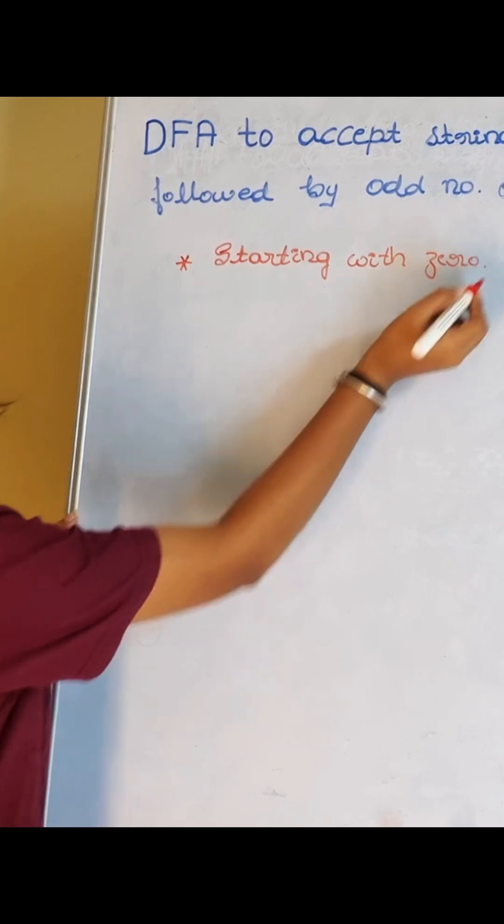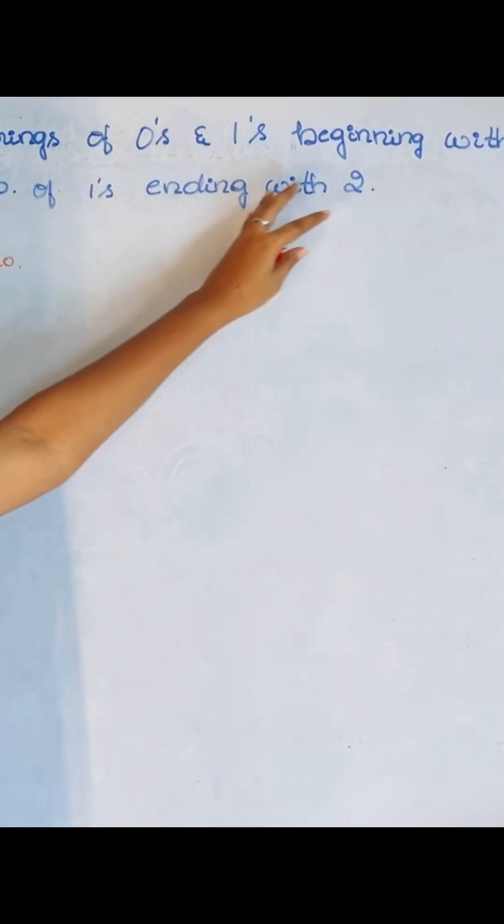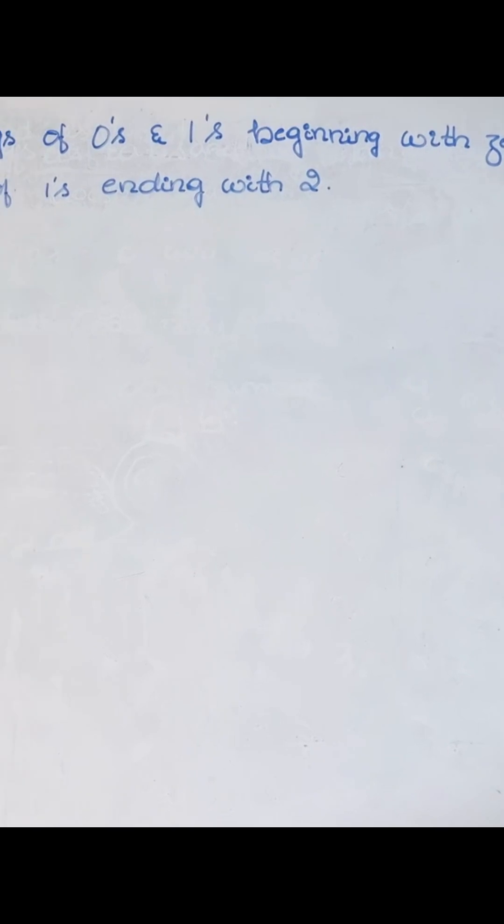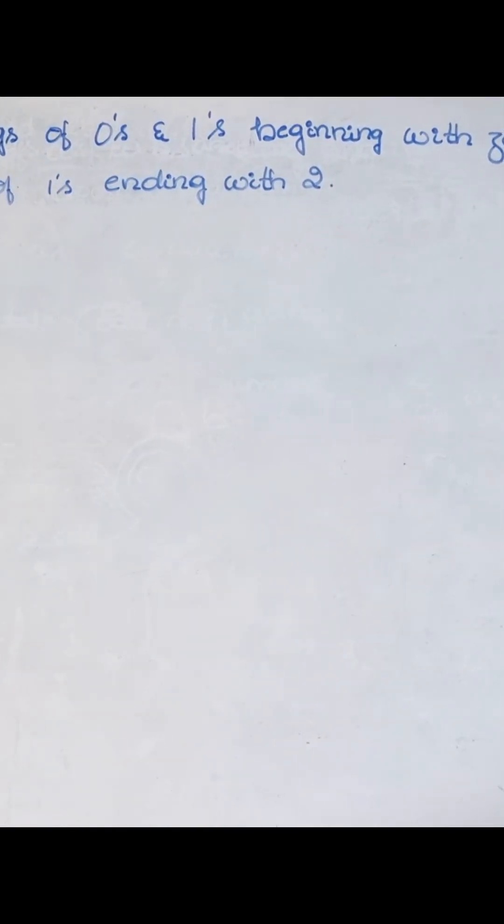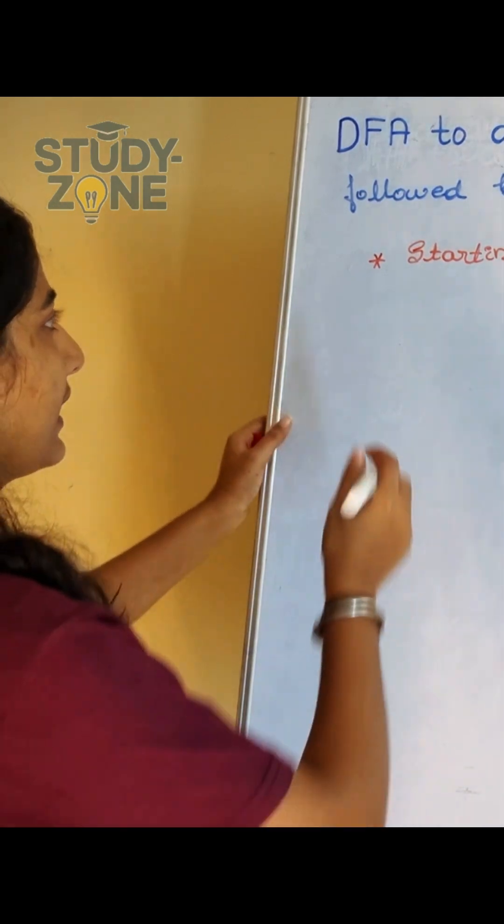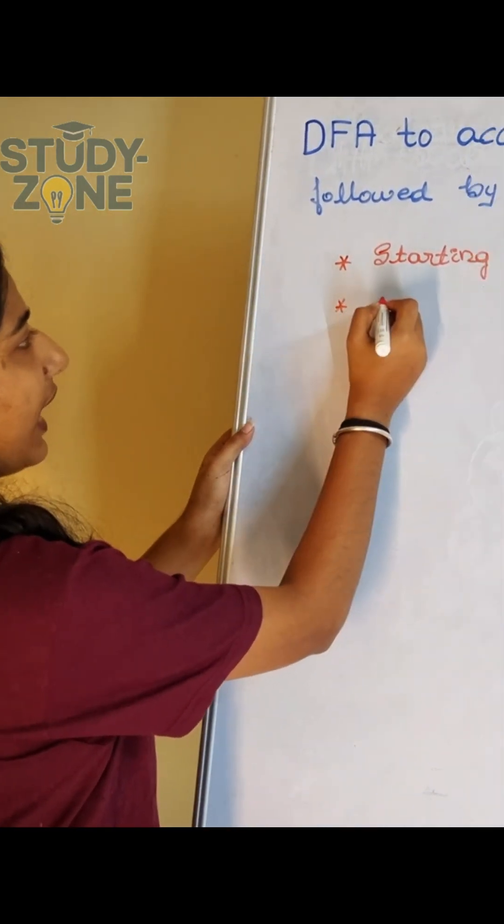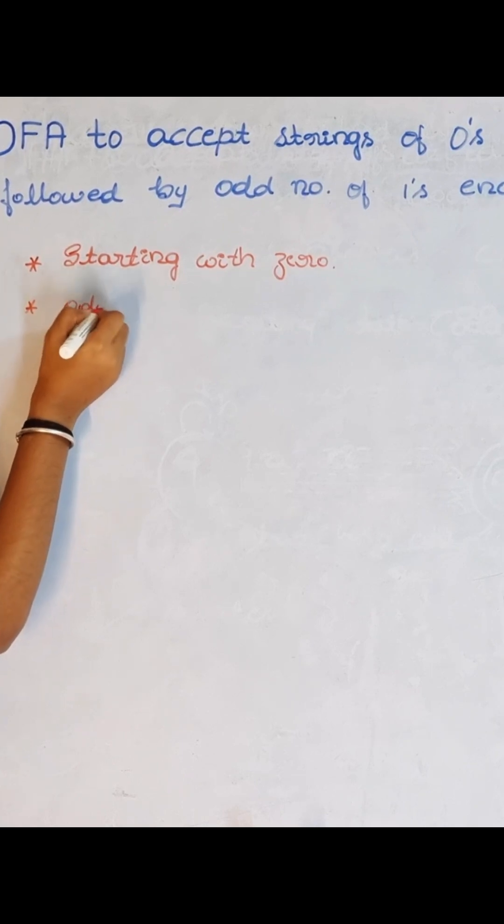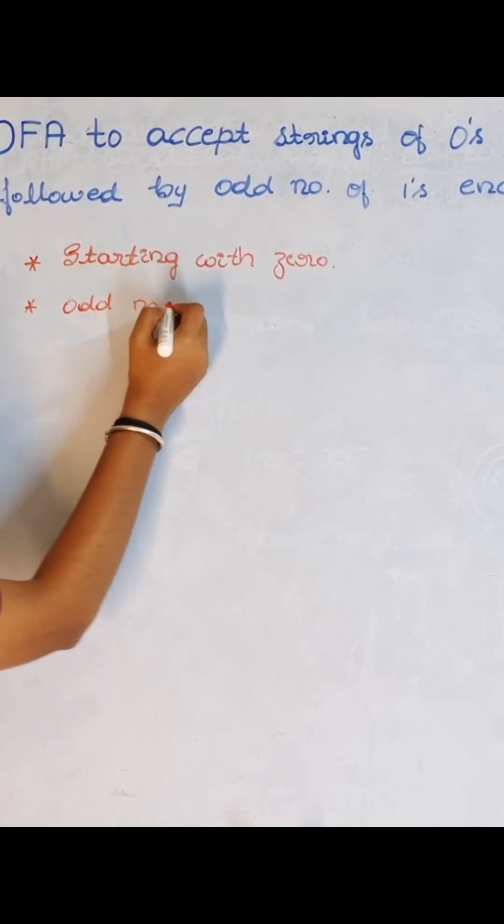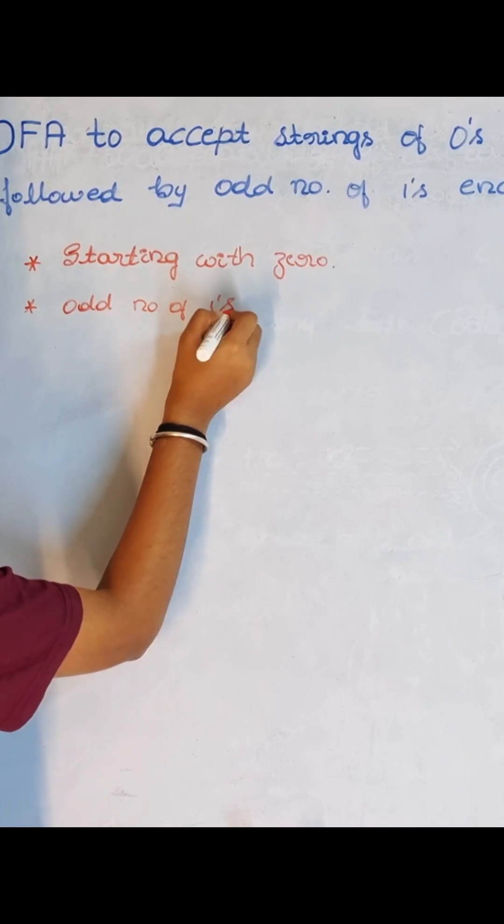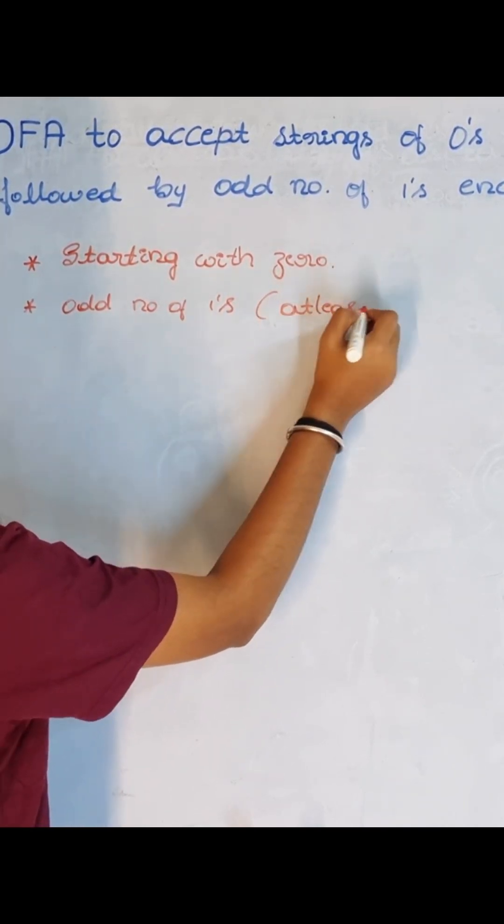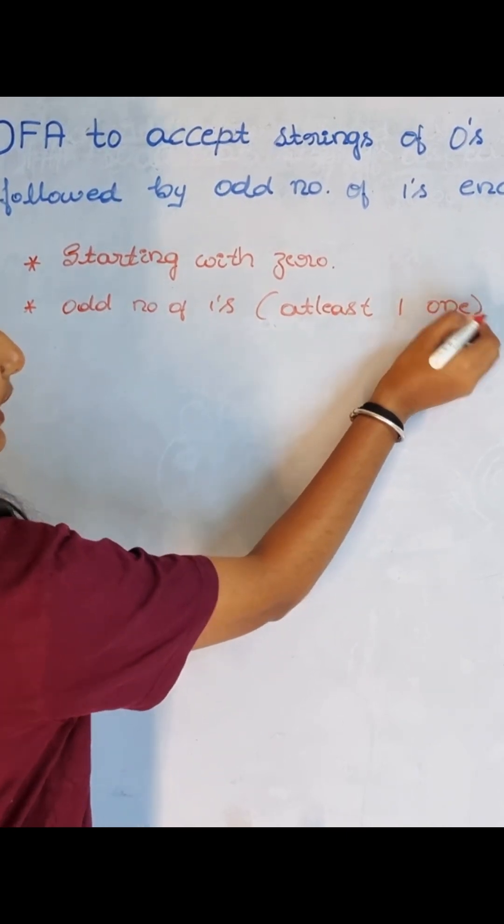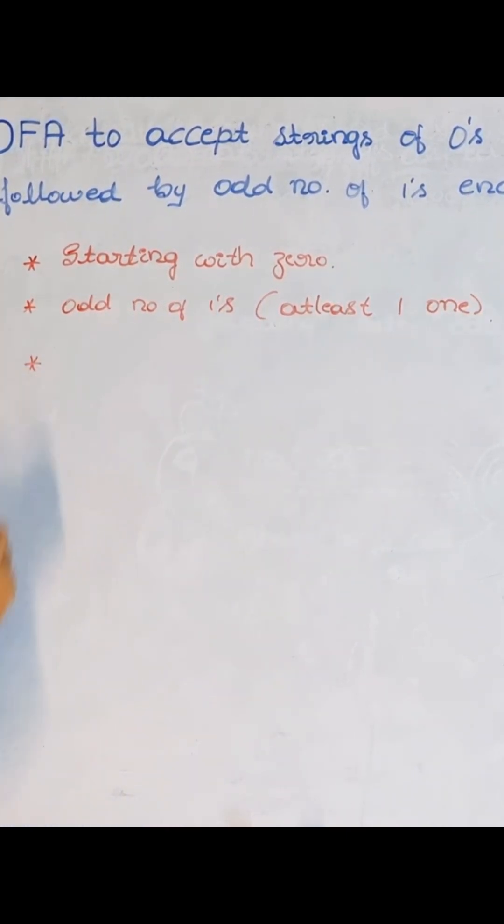The problem is to create a DFA to accept zeros and ones beginning with zero, followed by an odd number of ones, and ending with two. This means it should start with zero and then have an odd number of ones, which means at least one should be there. And then we have ending with two.